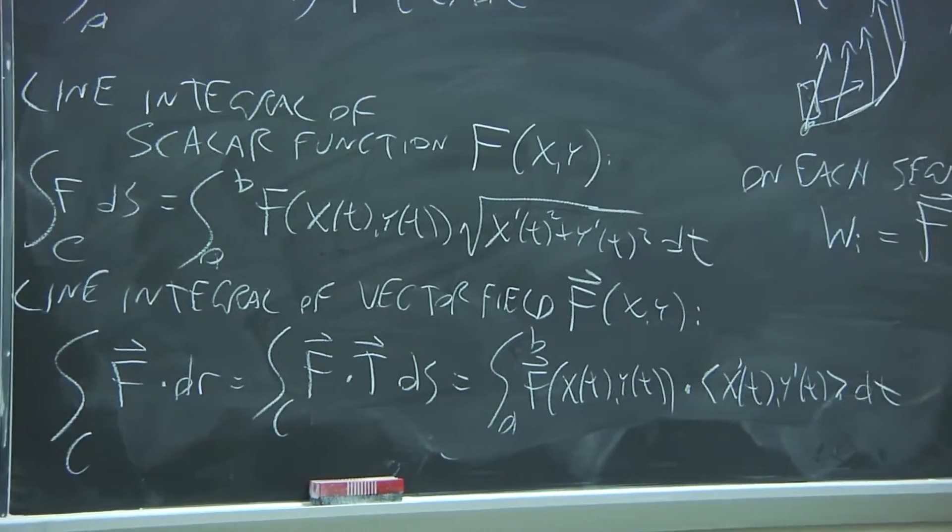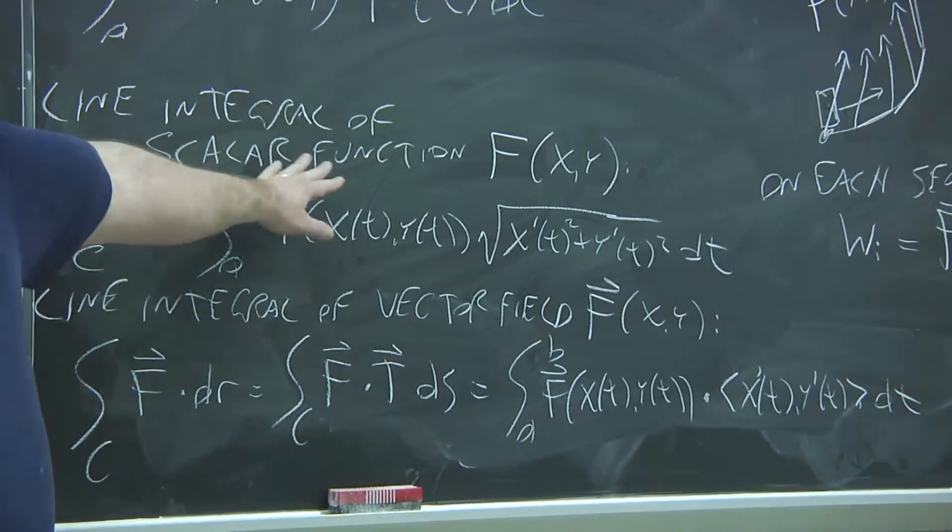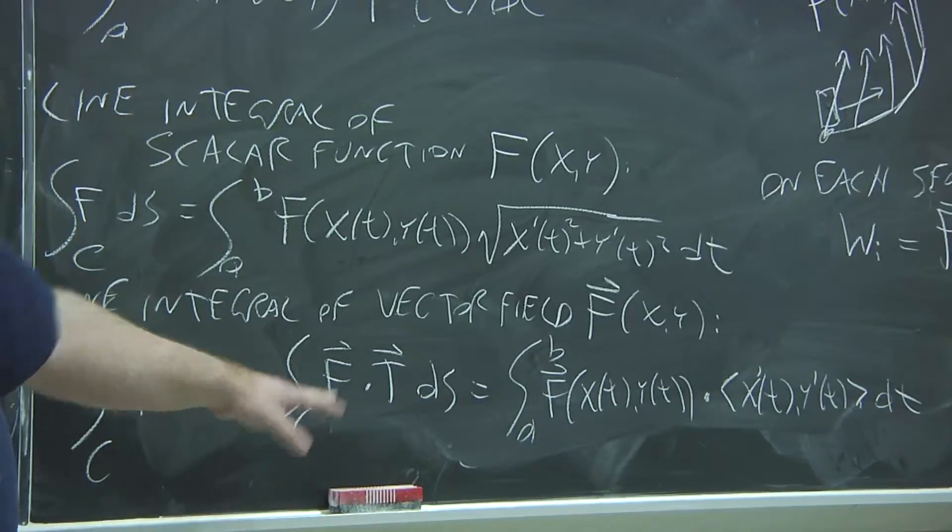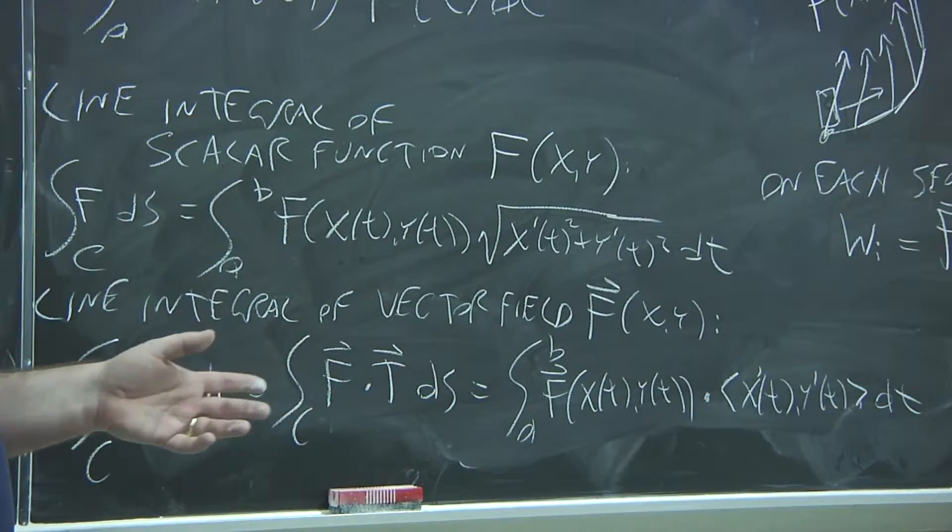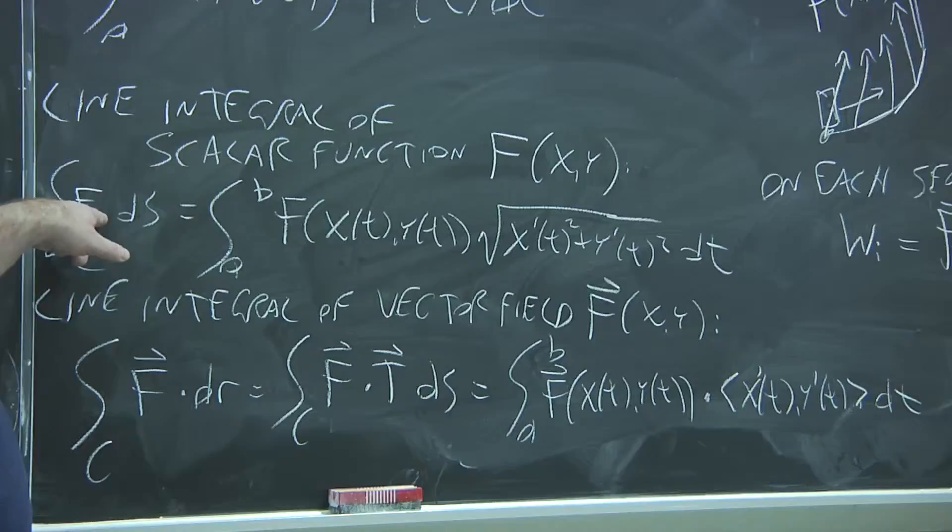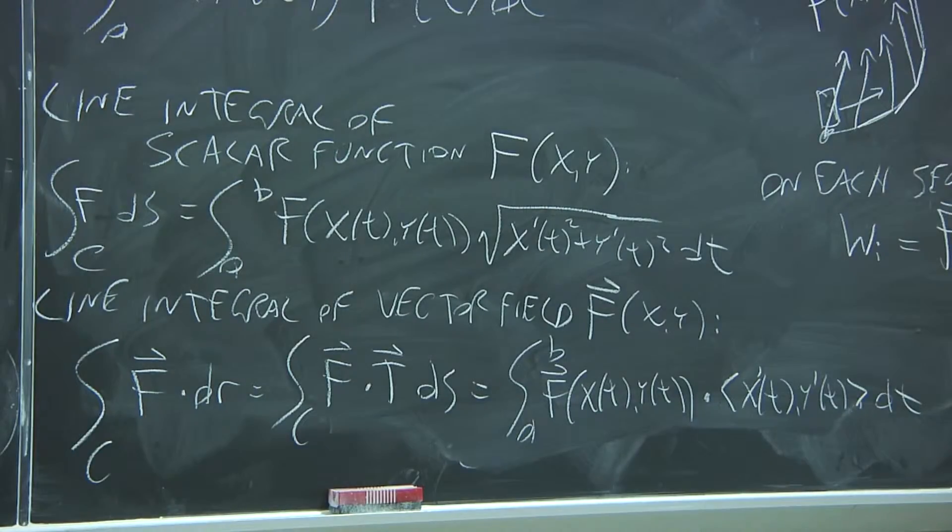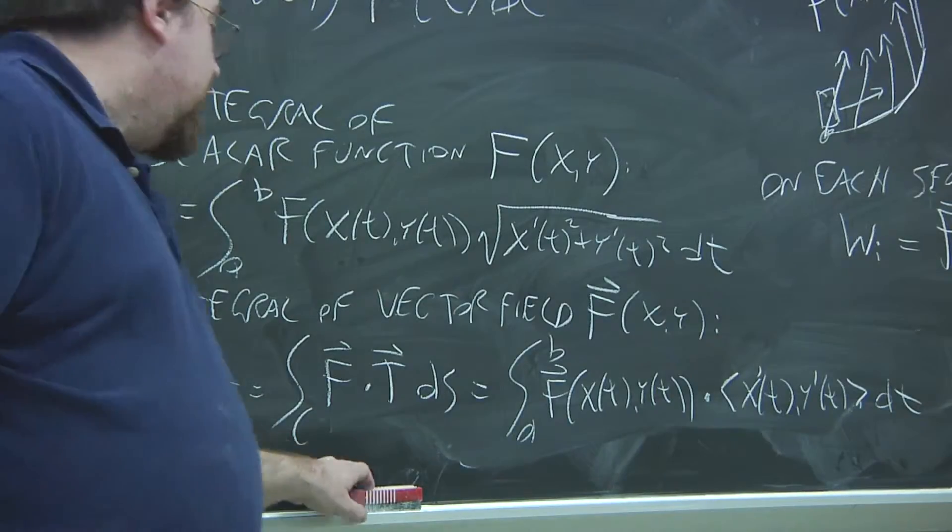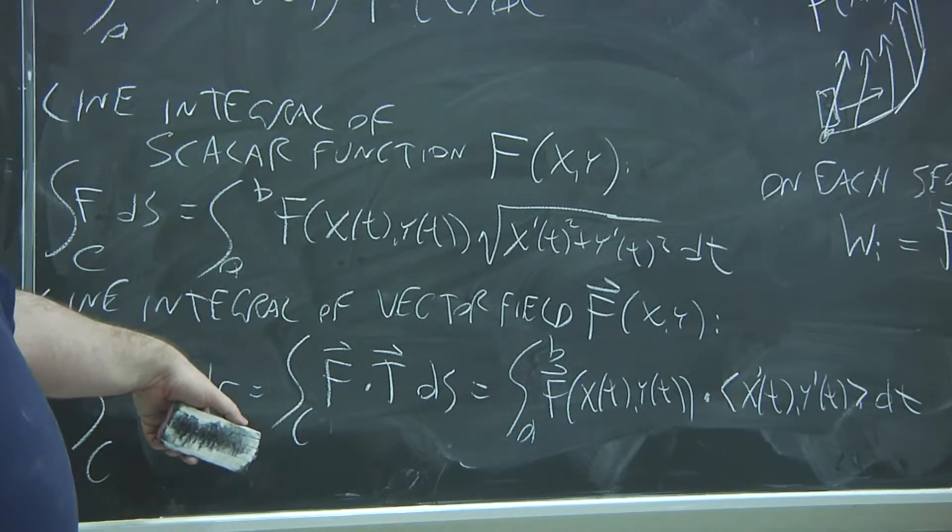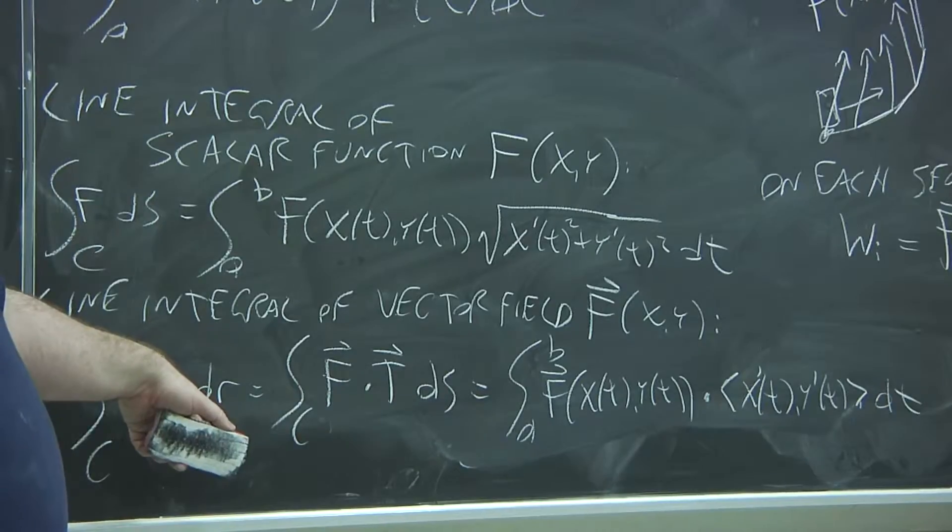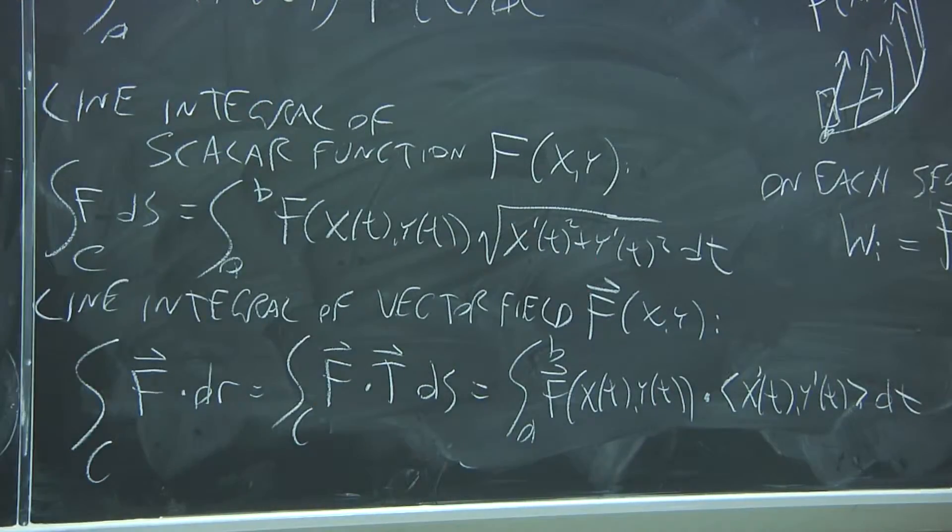So, it's important to keep in mind which one of these you're going to use. Only one of them makes sense depending upon whether you're integrating a scalar value function over a curve or a vector value function. In this case, the integrals can often turn out to be easier because you're not having to deal with this pesky square root factor.